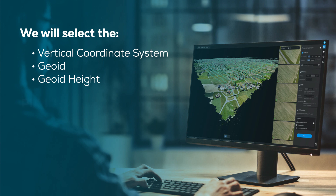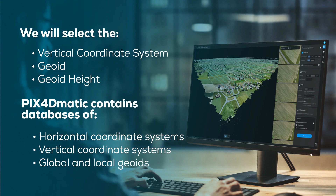PIX4D-MATIC includes a database of horizontal coordinate systems, vertical coordinate systems, and both global and local geoids. You must choose the correct vertical coordinate system, geoid, or geoid height to ensure that PIX4D-MATIC interprets the elevation of your GCP measurements correctly. If you select the wrong vertical coordinate system, geoid, or geoid height, your reconstructions may exhibit a significant amount of error in the Z-axis.